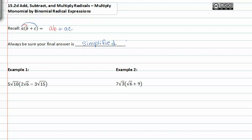In example one, we have a factor that has a radical in it and it's multiplied to a binomial inside parentheses. It's the same idea as what we just talked about where we have a in front of b plus c.